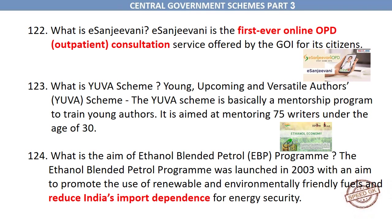What is Yuva Scheme? Yuva — Young, Upcoming and Versatile Authors — is basically a mentorship program to train young authors. It is aimed at mentoring 75 writers under the age of 30.